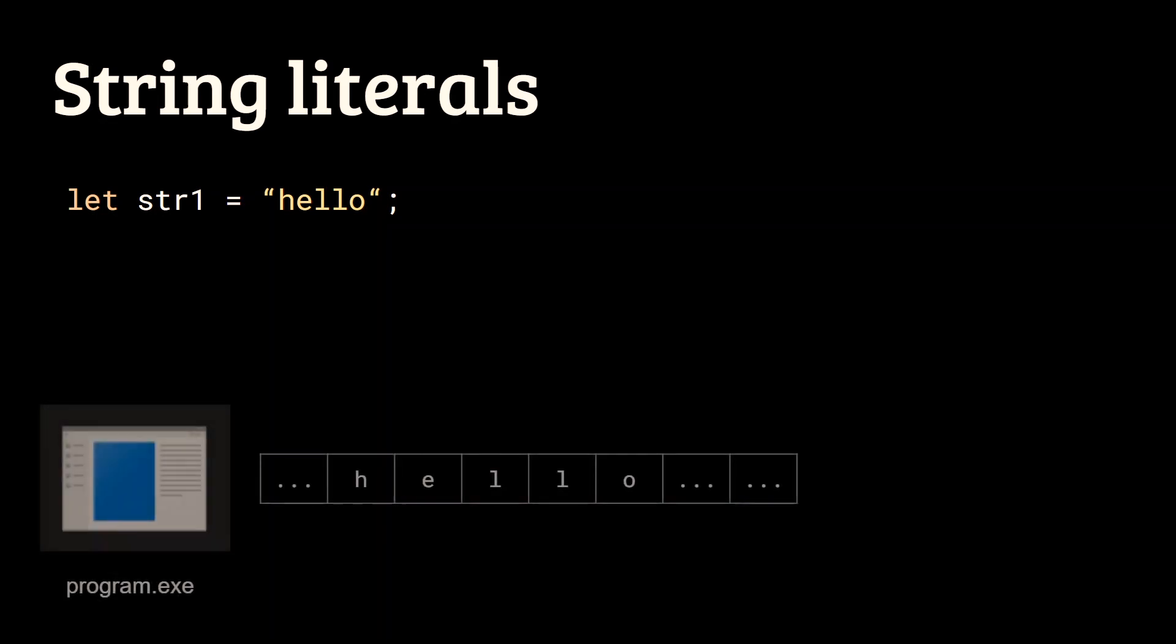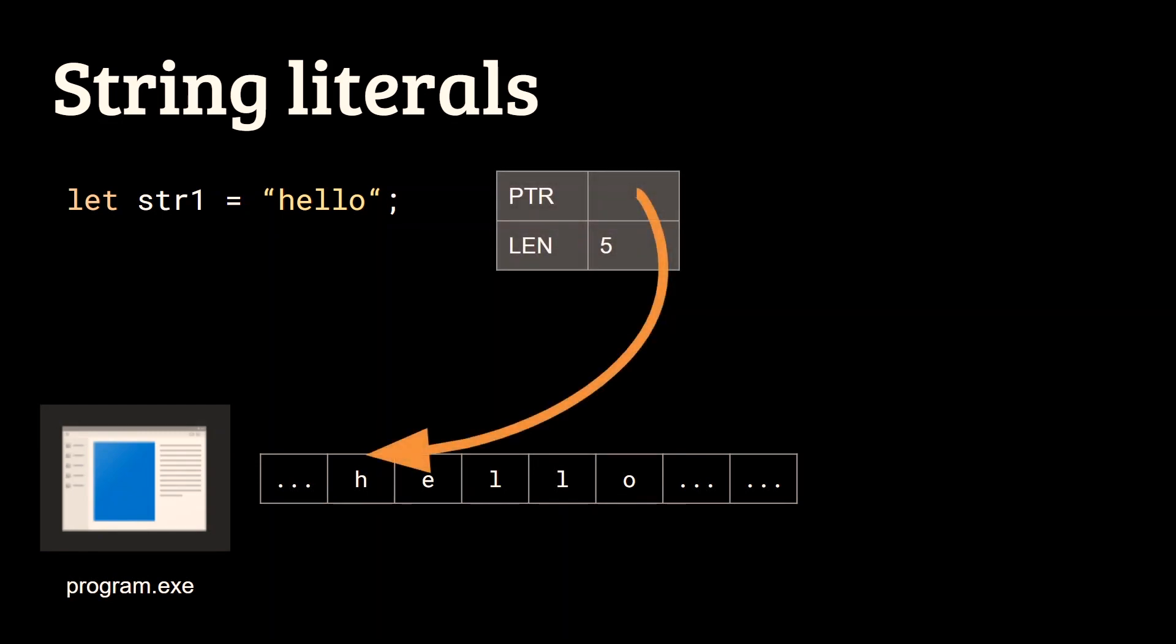One thing that often confuses beginners are string literals. In particular, when you write the following code, let string 1 equals hello, you are not allocating a string on the heap. Instead, you are creating an immutable string literal, whose content is stored on the binary itself, and this is possible because its content is known at compile time.